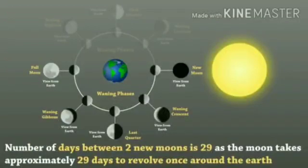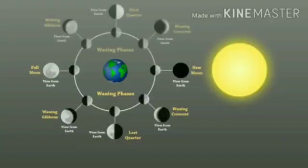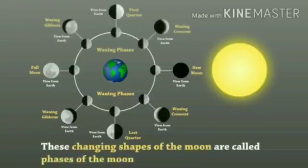As the moon takes approximately 29 days to revolve once around the earth, these changing shapes of the moon are called the phases of the moon.